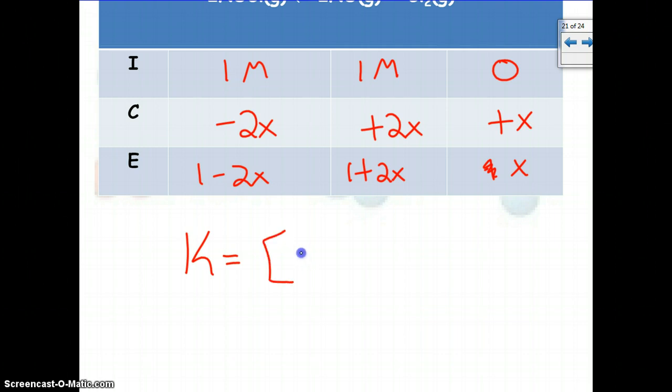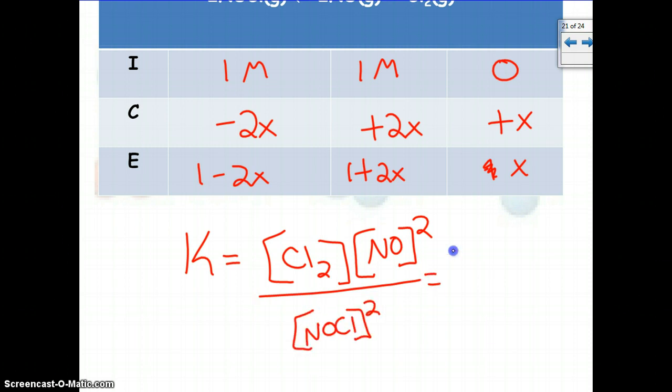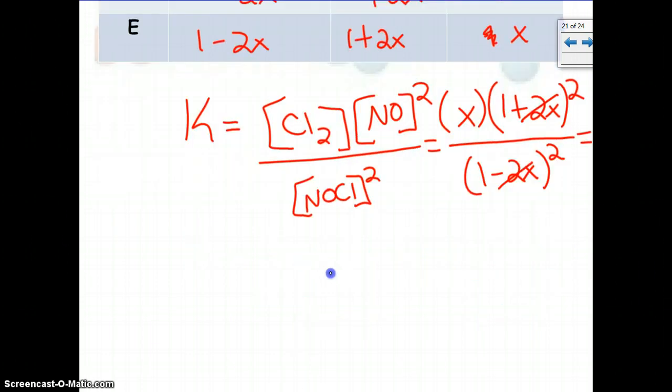So we had Cl2 and NO to the second, and then we had the NOCl to the second as well. All right, so our Cl2 was x, and then our NO2 was 1 plus 2x, and that would be squared. So we're again looking at a cube root on top, and then 1 minus 2x squared down there. Again, because K is small, we can approximate, so we can just cancel those out. That would give us x on top and 1 on the bottom. So this one happens to simplify down real easy, and we're just equal to x, which is 1.6 times 10 to the negative 5th.